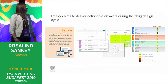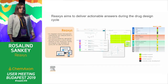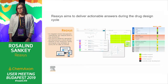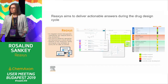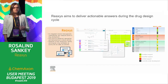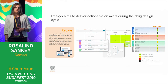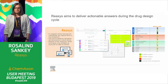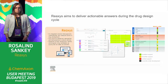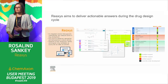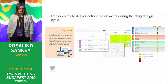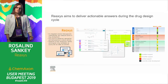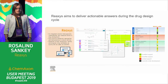Reaxis fits in well here because along this route there are huge amounts of information coming from both in-house knowledge and also published knowledge that needs to be leveraged to make really informed decisions — go and no-go decisions at each point of the cycle. At Reaxis, we take information from patents and from literature, extract the information, normalize the data, and put it into a user-friendly interface which gives actionable insights so you can make decisions.